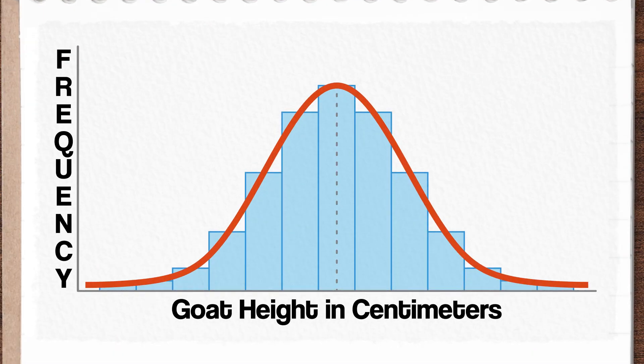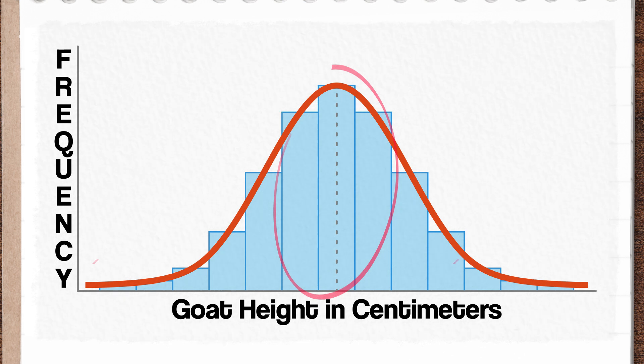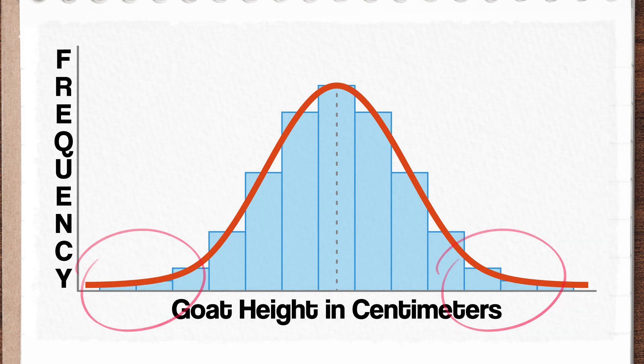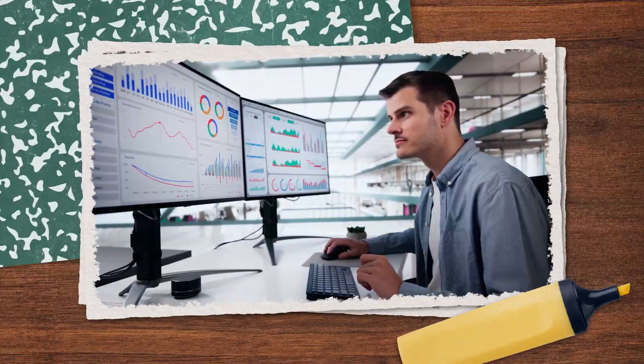When we plot the average goat heights of all of my friends' goat pastures, they fall into a curve where lots of them are around the middle, and fewer and fewer of them are out on the edges. We don't see pastures full of goats as small as mice or as big as giraffes in the real world, because the odds are so incredibly rare for goats of that height to exist.